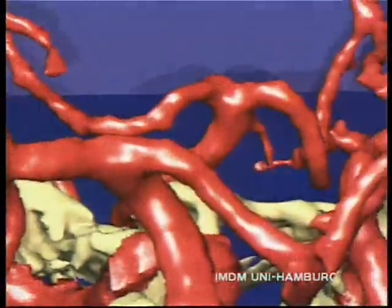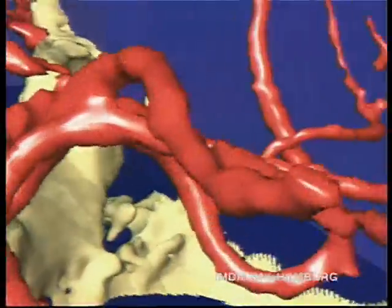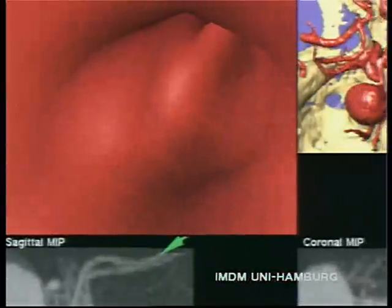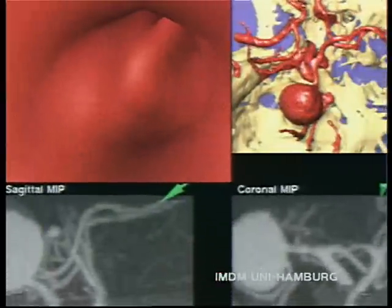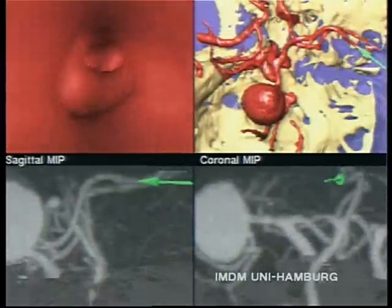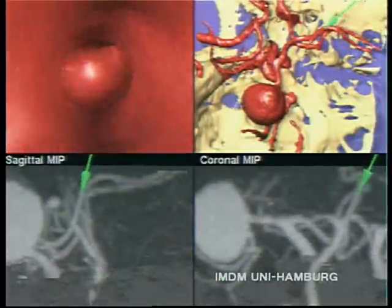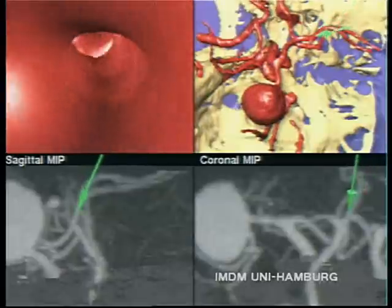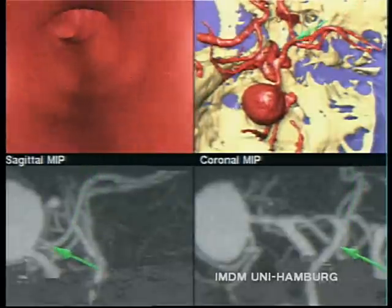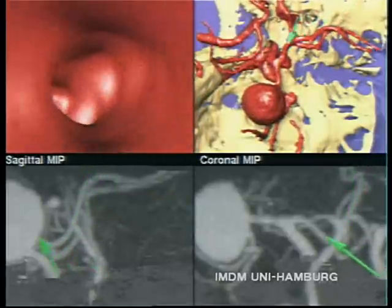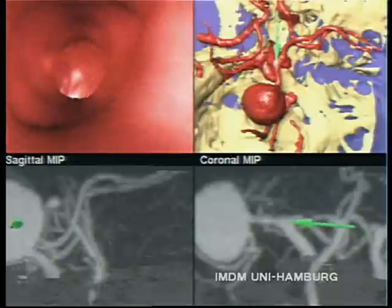But we can also put ourselves onto the tip of a catheter and view the vessel from inside. We enter the anterior cerebral artery. On three scout views, two being maximum intensity projections, the green arrows show the position and the orientation of the viewer on his or her way to the aneurysm.